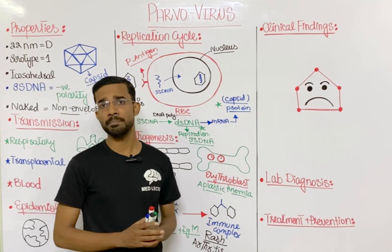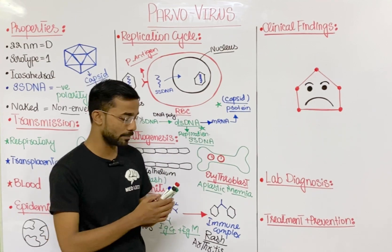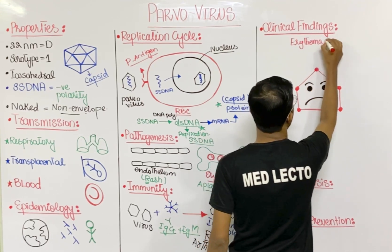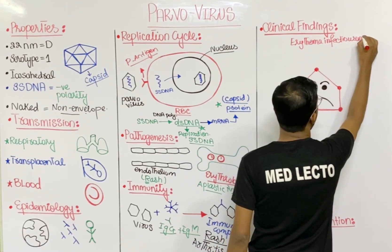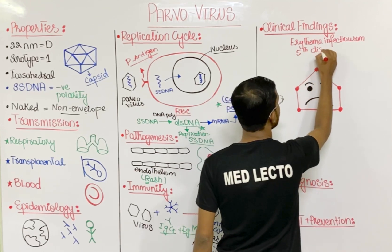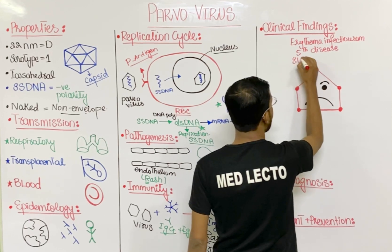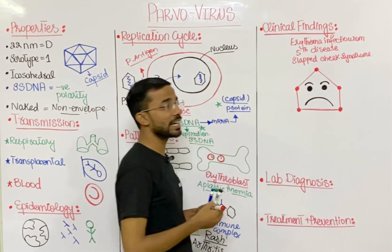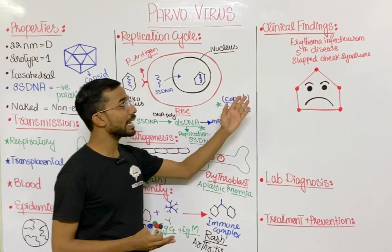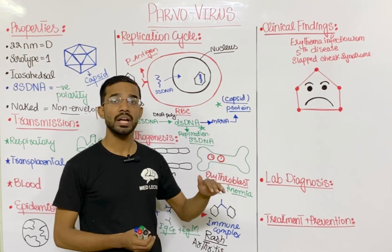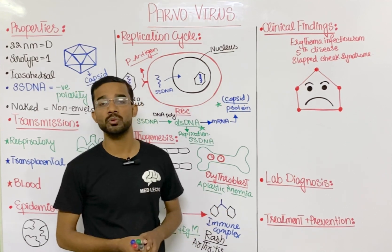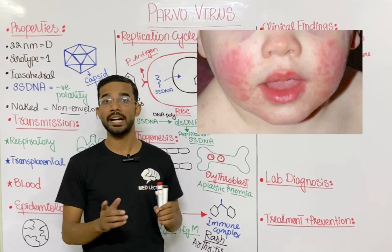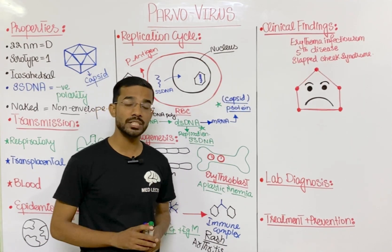The most important clinical finding of parvovirus is Erythema Infectiosum, also called fifth disease or slapped cheek syndrome. These are different names for the same macular rash. Slapped cheek syndrome refers to the bright red rash on both cheeks bilaterally, seen specifically in childhood. The condition ranks fifth among the classic childhood macular rashes.